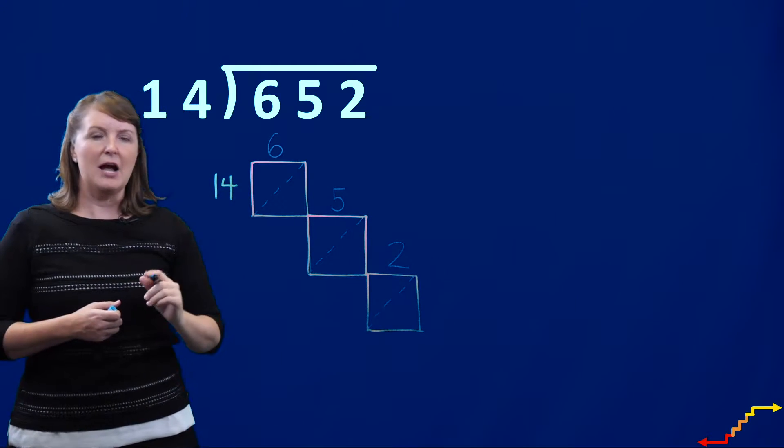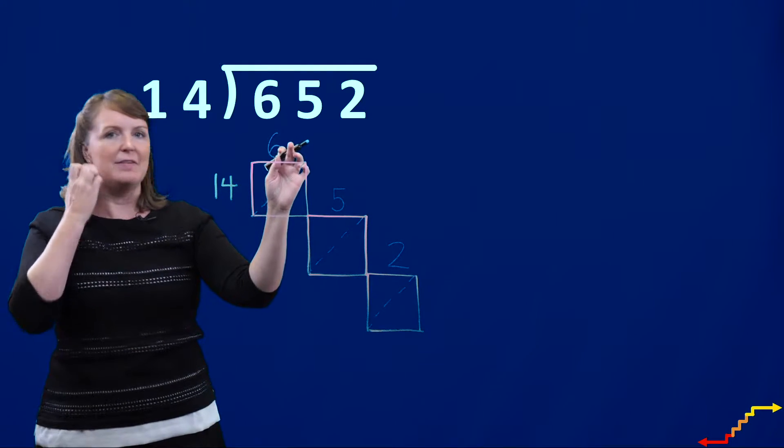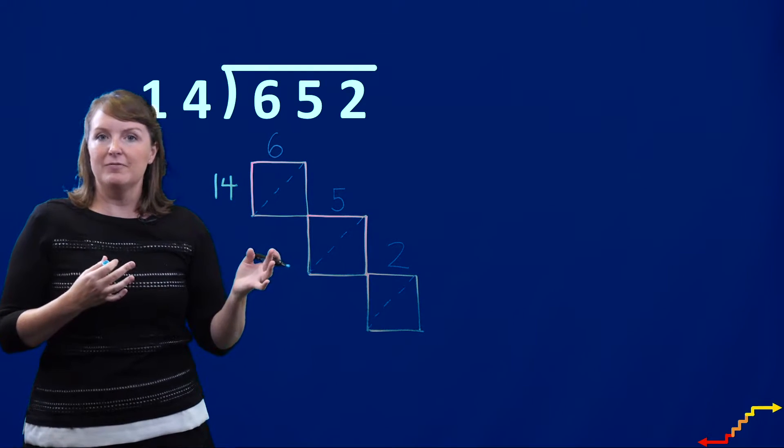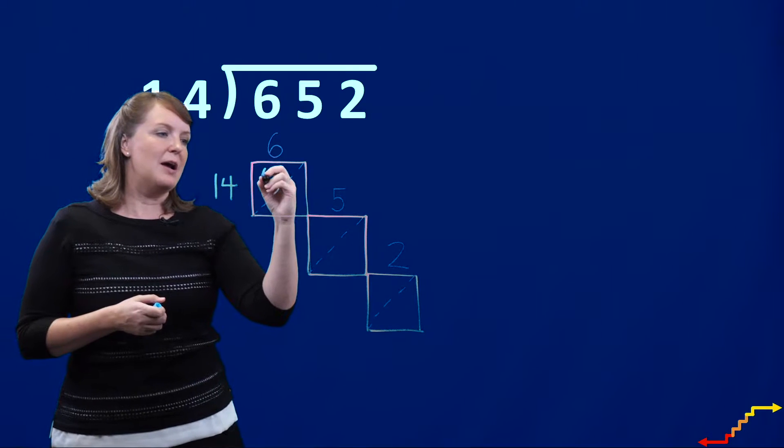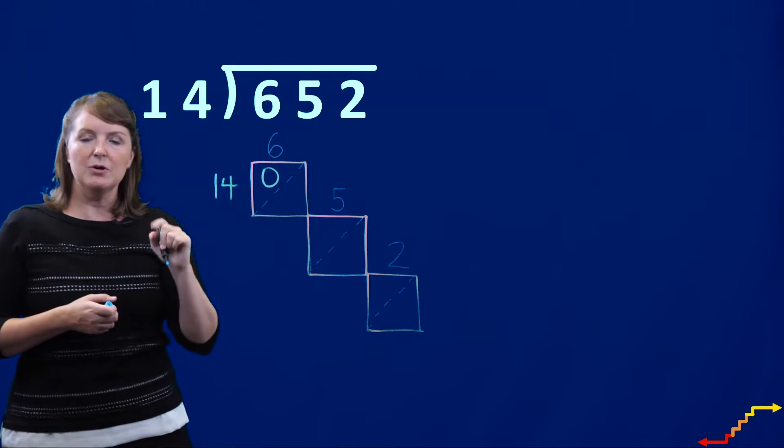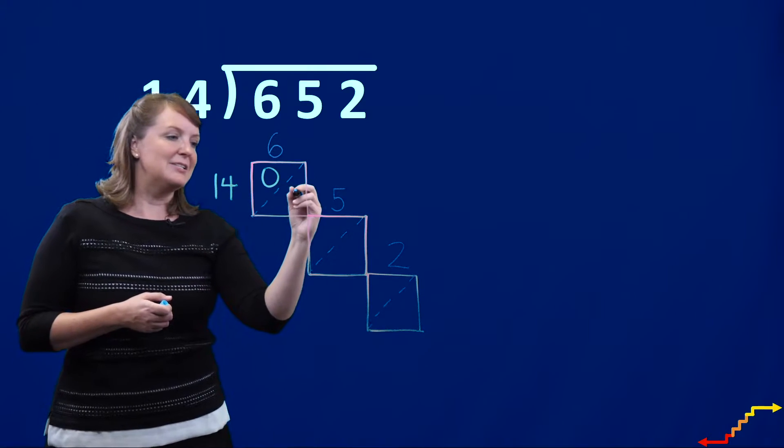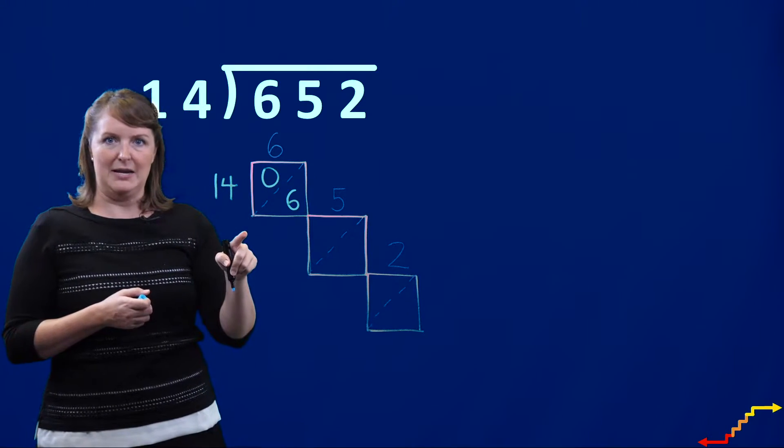The first thing I'm going to focus on is how many groups of 14 can I make if I have six? Well, if I only have six objects I cannot make a full group of 14. So I can make zero groups of 14, but I still have six remaining.